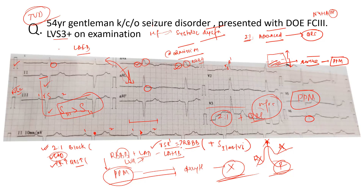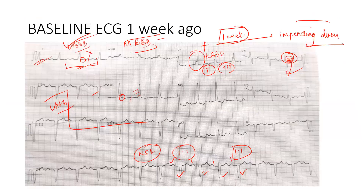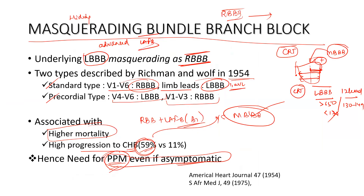It is very, very crucial to look for this. Whenever you have an RSR', look carefully — if the S wave is not there, be even more cautious. You have to push, because no one can read the ECG for you other than yourself. No one else can be the master of the ECG other than yourself — you have to train yourself for that. I hope this was useful. We'll see you next week with another interesting ECG. Thank you.